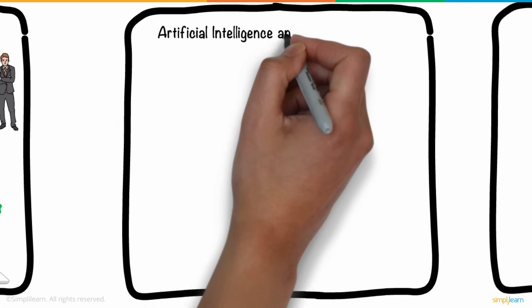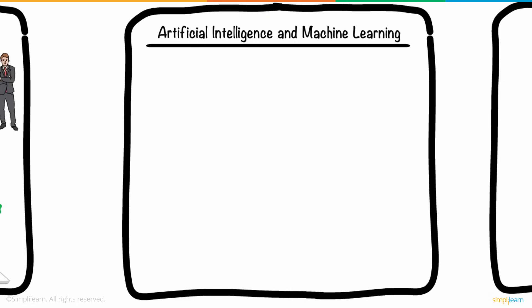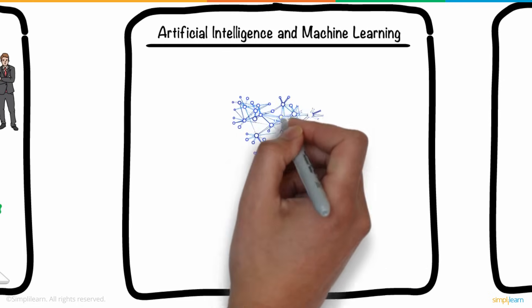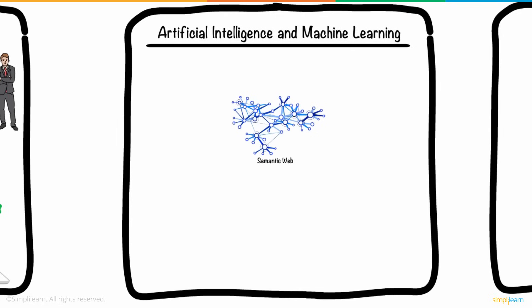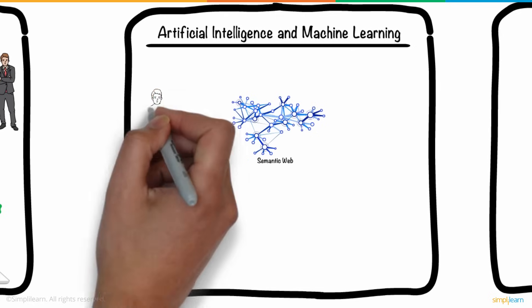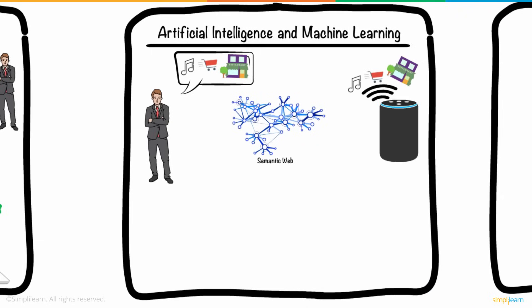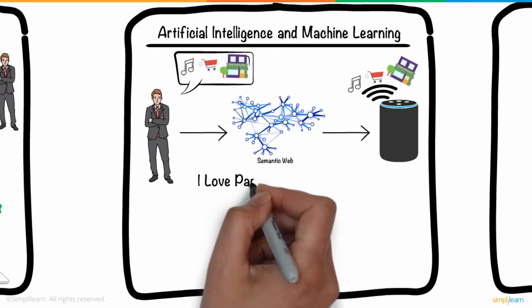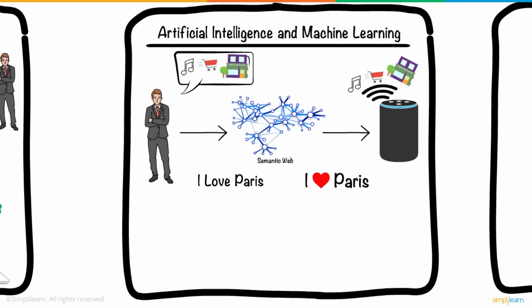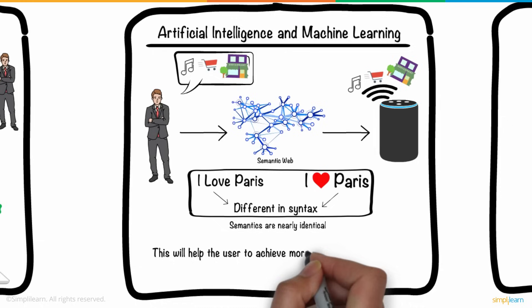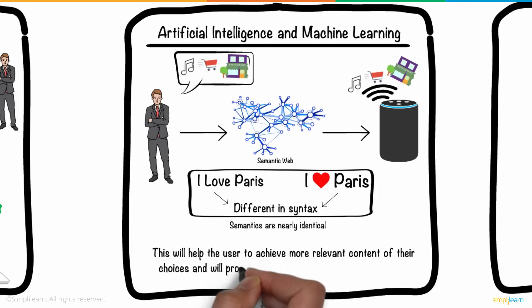Third is artificial intelligence and machine learning. In Web 3.0, through technology based on semantic web ideas and natural language processing, computers will be able to understand the information in the same way that people do. For example, I love Paris and I heart Paris may seem different in syntax. However, their semantics are nearly identical. This will help the user to achieve more relevant content of their choices and will provide them ease with internet browsing.